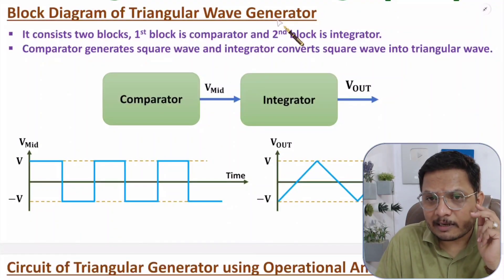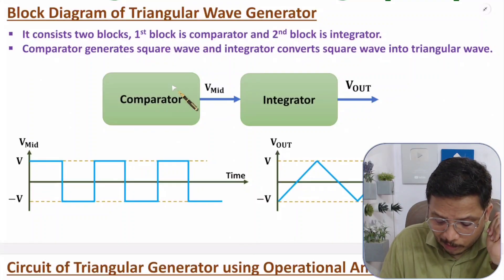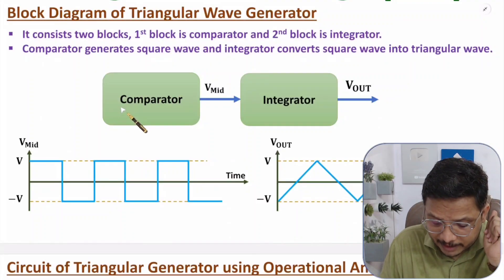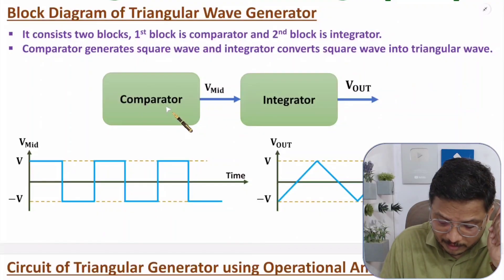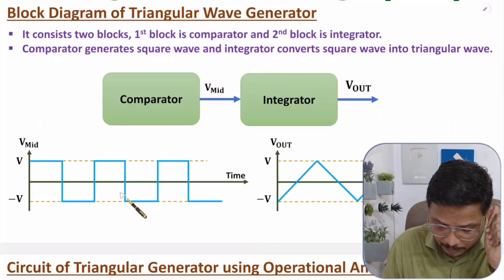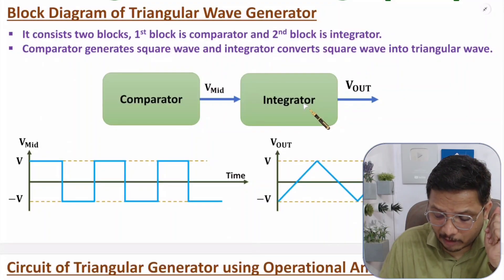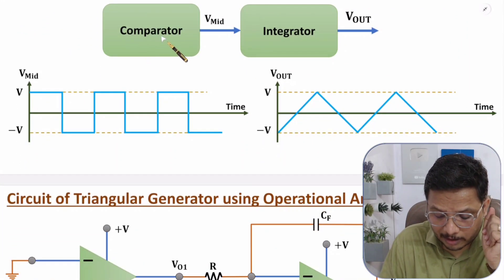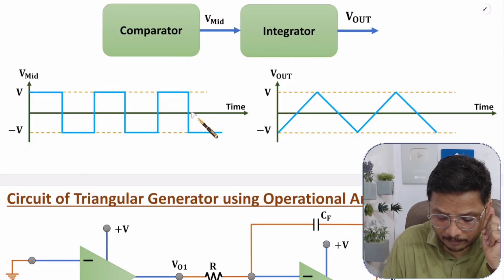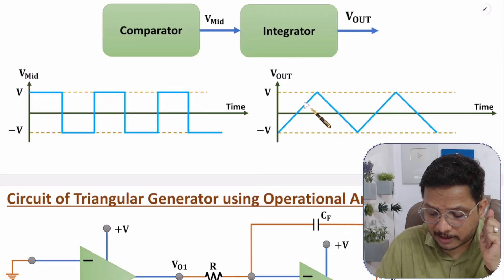In the block diagram of the triangular wave generator, we have two basic blocks: first is the comparator and second is the integrator. The comparator generates a square wave, and these square waves are integrated by the integrator, whose output is the triangular wave.